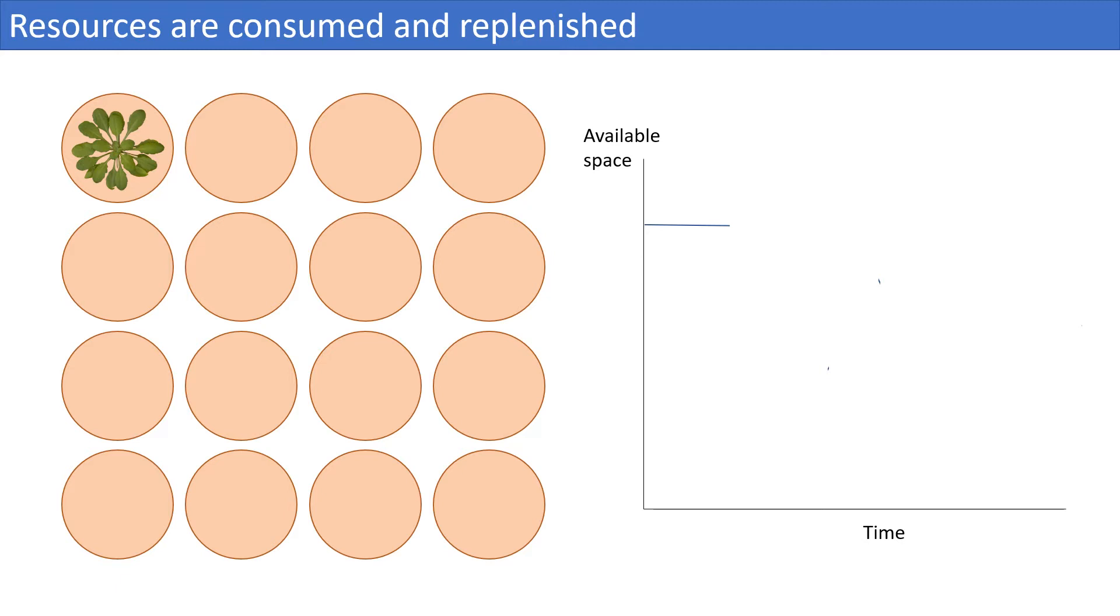Take space as a resource. The absolute amount of available space obviously does not change. However, two plants cannot grow on exactly the same position or too close nearby. We can thus consider available space as discrete patches, each of which supports the growth of exactly one individual. If a patch is occupied by a plant, then the resource is used up.